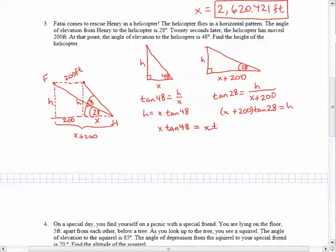And I'm also going to distribute the tan of 28. So I would get x times the tangent of 28 plus 200 times the tangent of 28.